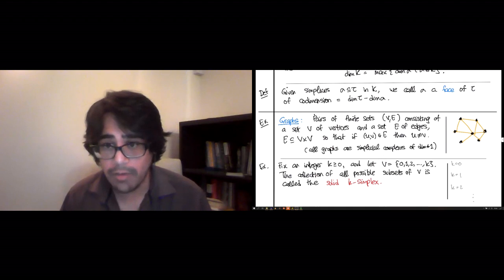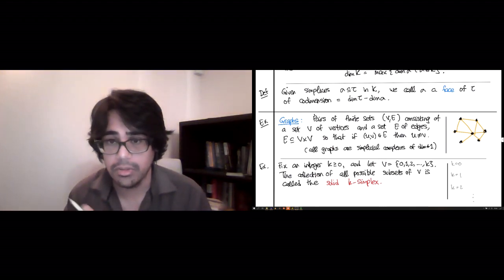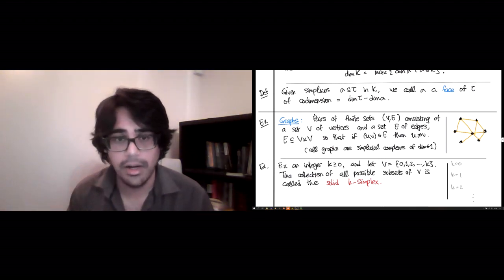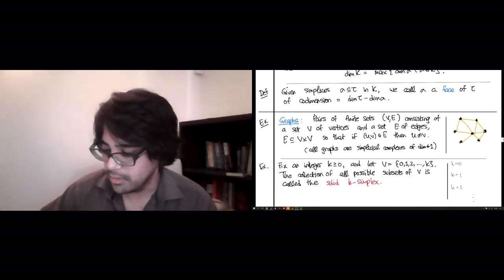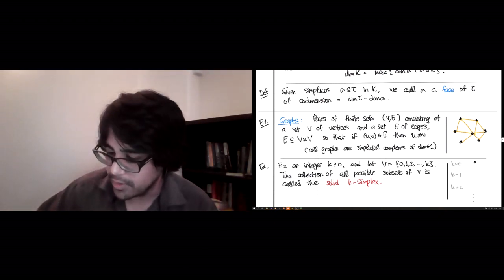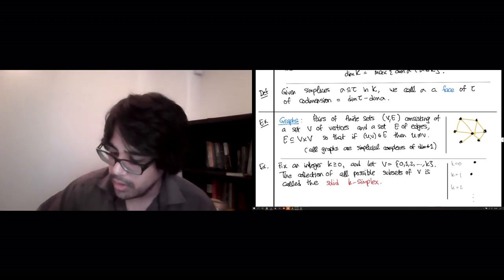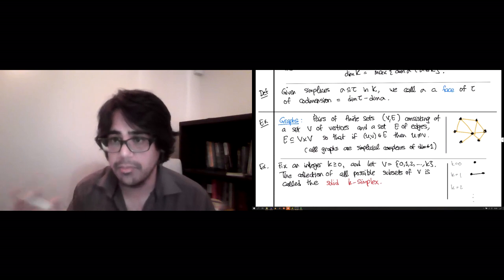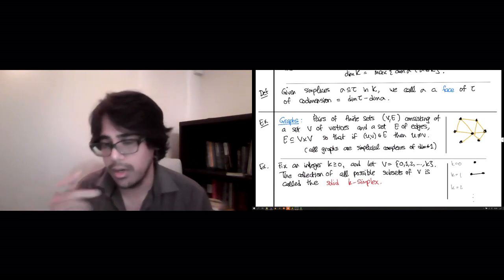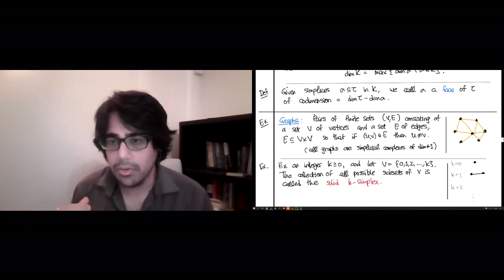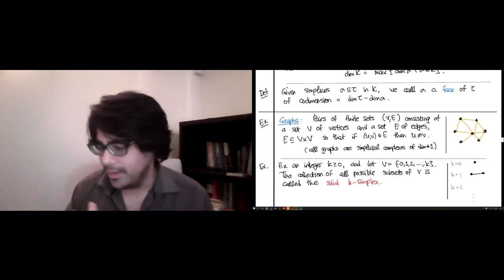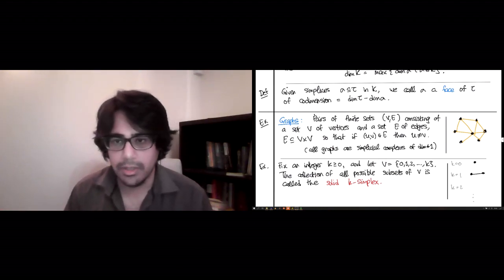So for k equals zero, you have just the vertex set V equals zero. It's just one vertex there, and every possible subset that's non-empty is just that vertex itself. So that's all you get. For k equals one, you have zero and one, and then the subset containing both those, the way an edge zero, one, would be. Now you have this is what a one-dimensional, it's a graph as you would expect because it has dimension one.